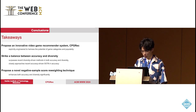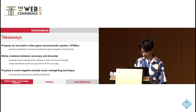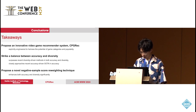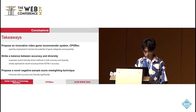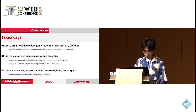To conclude, we proposed an innovative recommender system focusing on video game recommendation, named CPGRAC, engineered to harness the potential of important information about games such as category and popularity. As a balance-oriented framework, we find an ideal balance between accuracy and diversity, surpassing recent baselines in diversity while closely approaching recent accuracy-driven solvers in accuracy. Finally, we proposed a novel negative sample score rating to enhance both accuracy and diversity significantly.